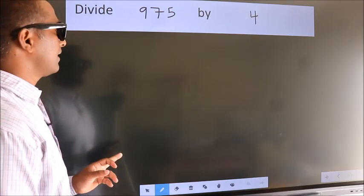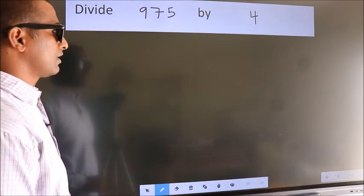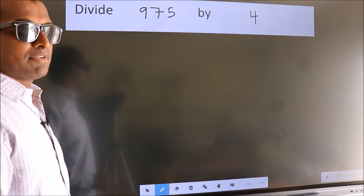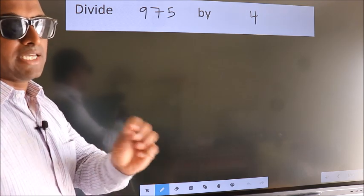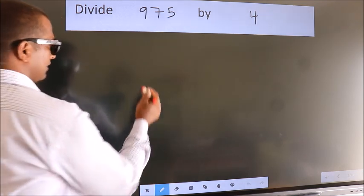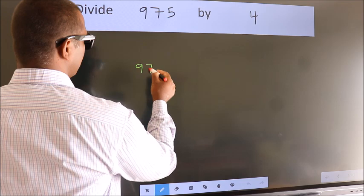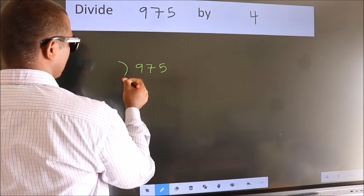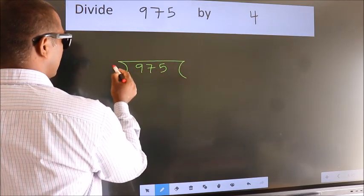Divide 975 by 4. To do this division, we should frame it in this way. 975 here, 4 here.